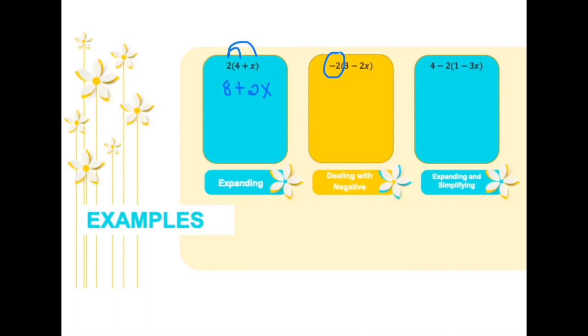And negative times a positive is negative. So 2 which is negative 2 times 3 will be negative 6. Negative 2 times negative 2x will be positive 4x.